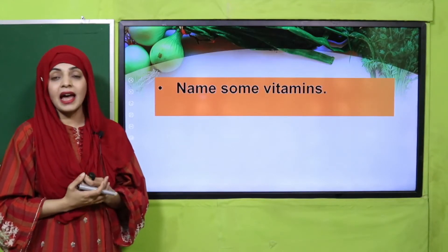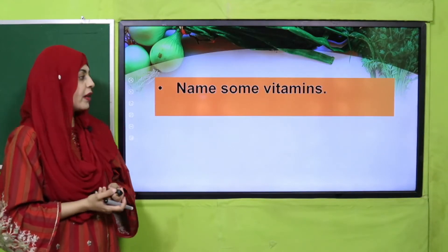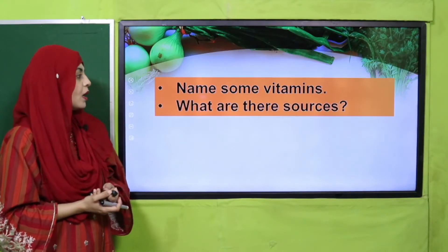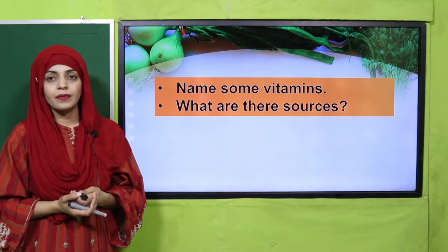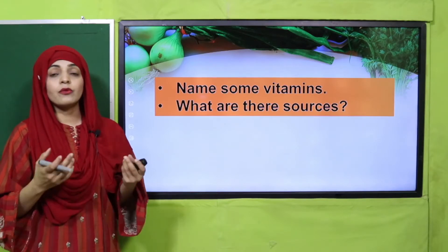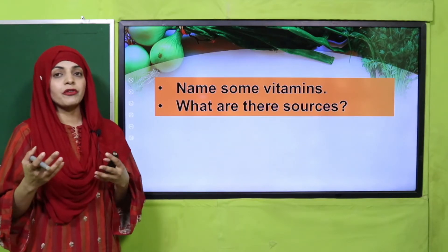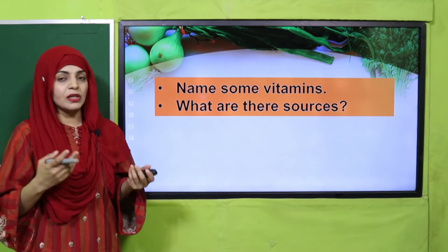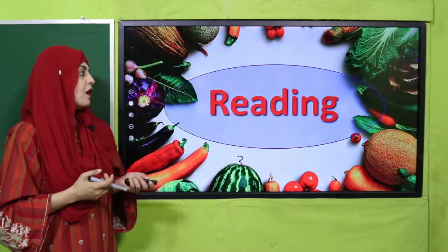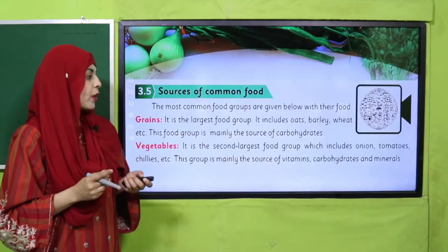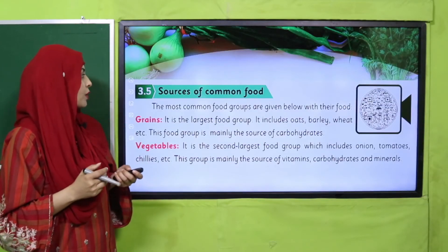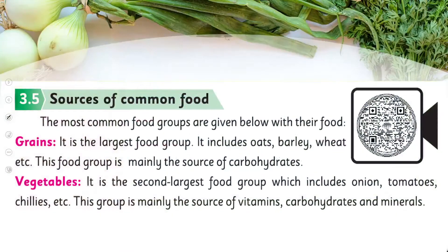Very good! What are their sources? We get vitamins from different fruits and vegetables. Very good! Now is the time for reading — quickly open 'Sources of Common Food' in chapter number three of your science book.